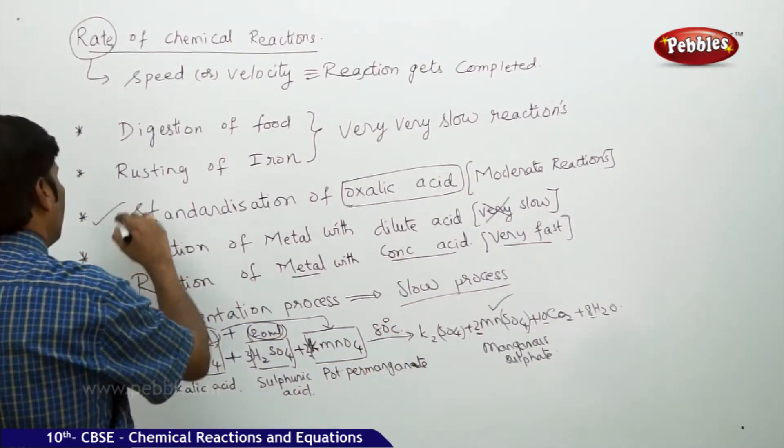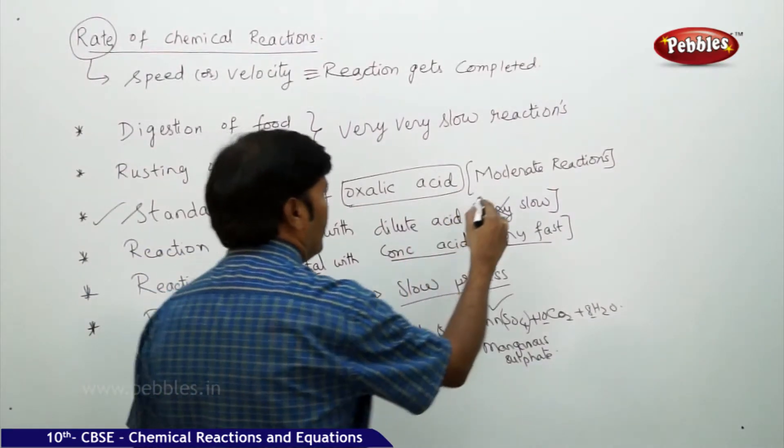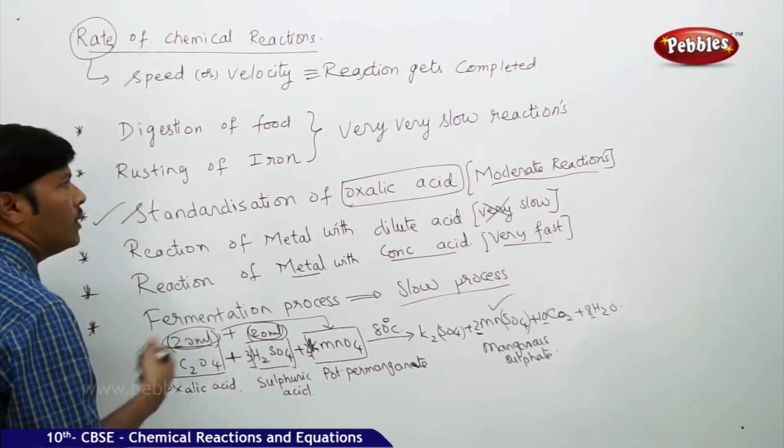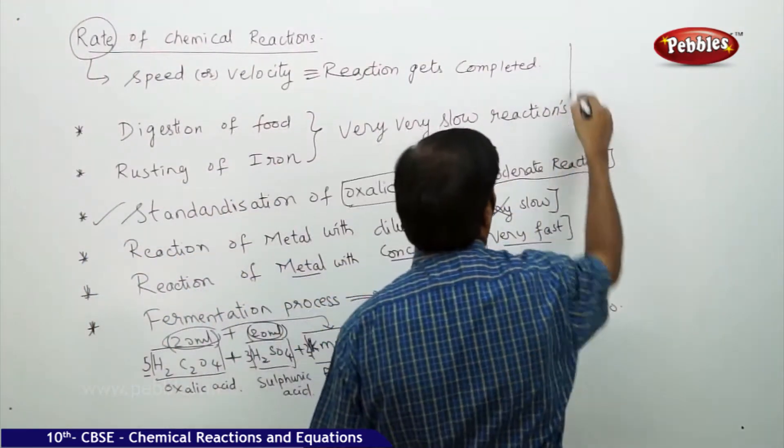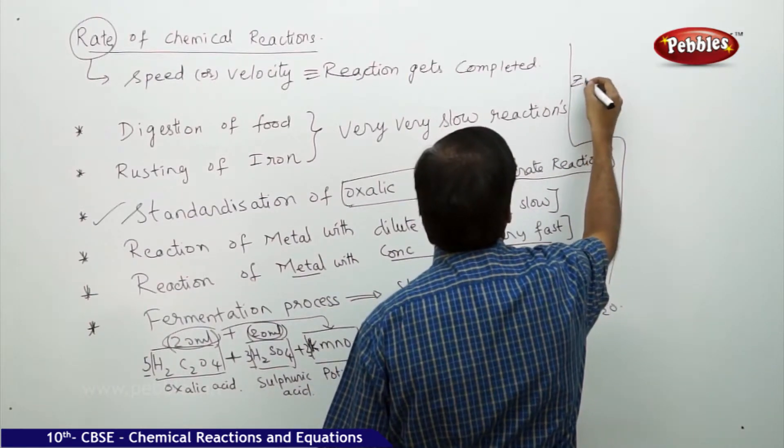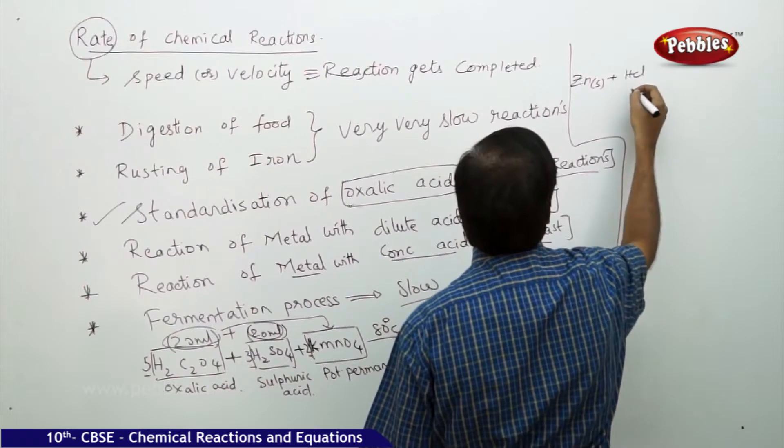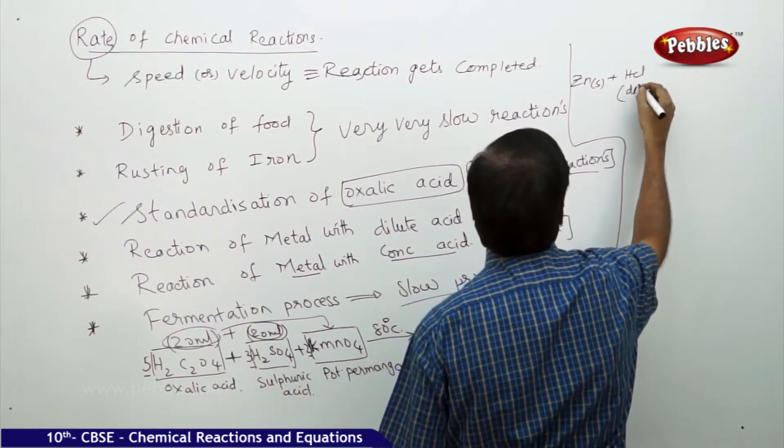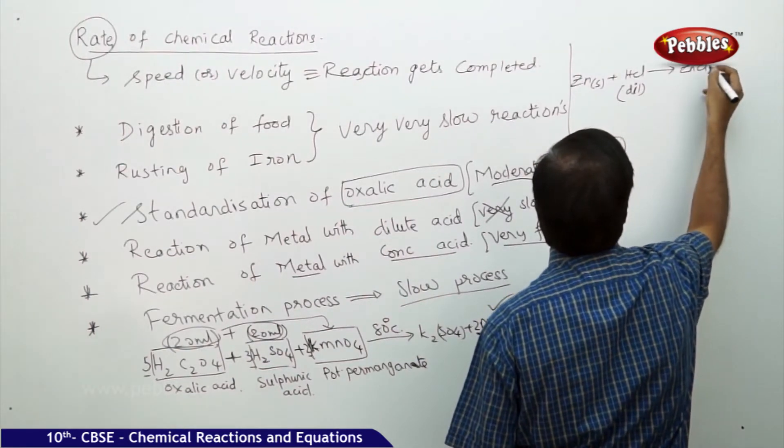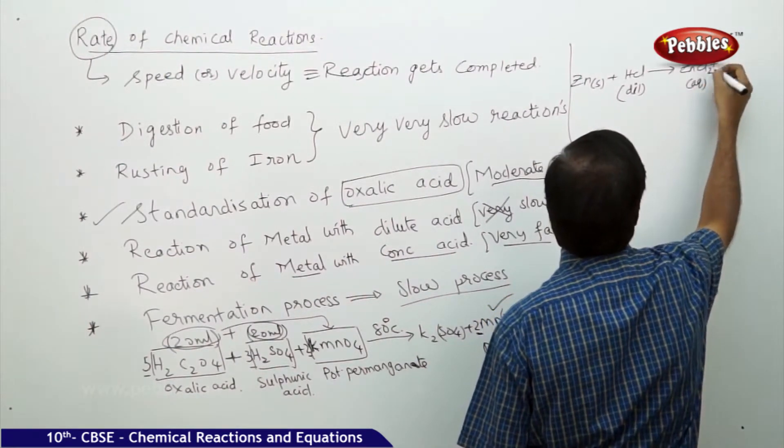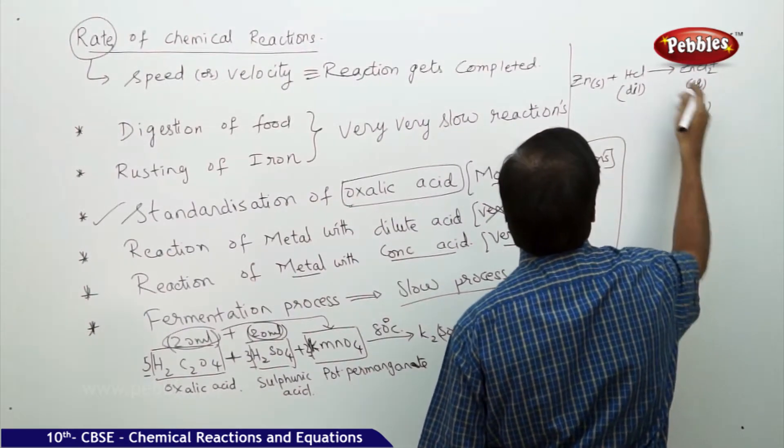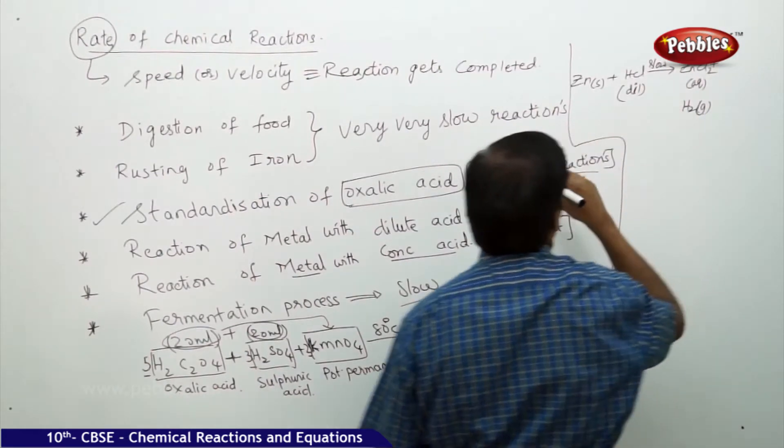Reaction of metal with dilute acids - this is not a new reaction. I can just show you a very simple example. Suppose zinc solid reacts with HCl which is dilute. Immediately you can find that you get zinc chloride aqueous plus H2 gas is liberated. The evolution of hydrogen gas is very slow because the acid is dilute.